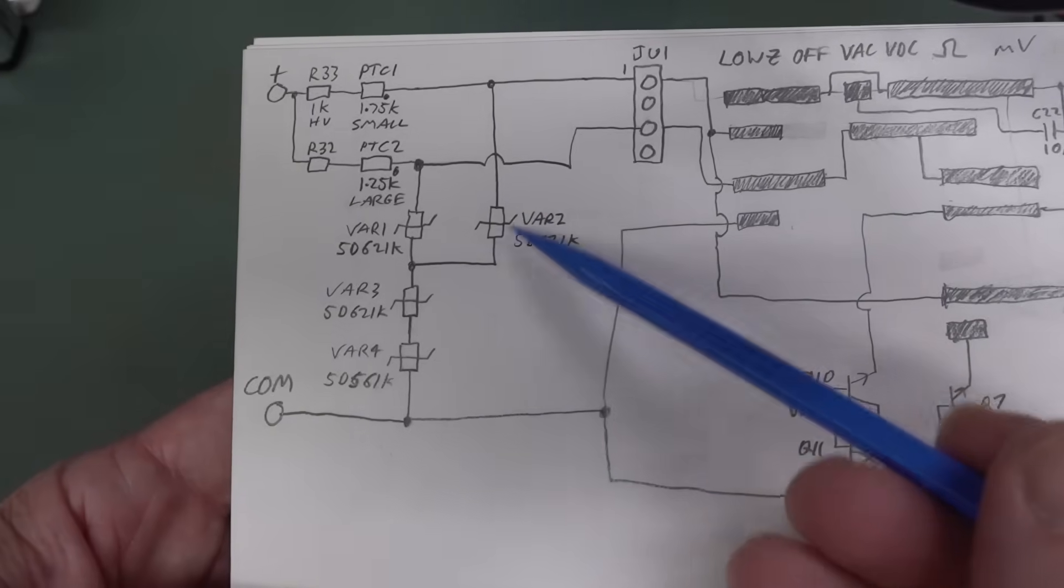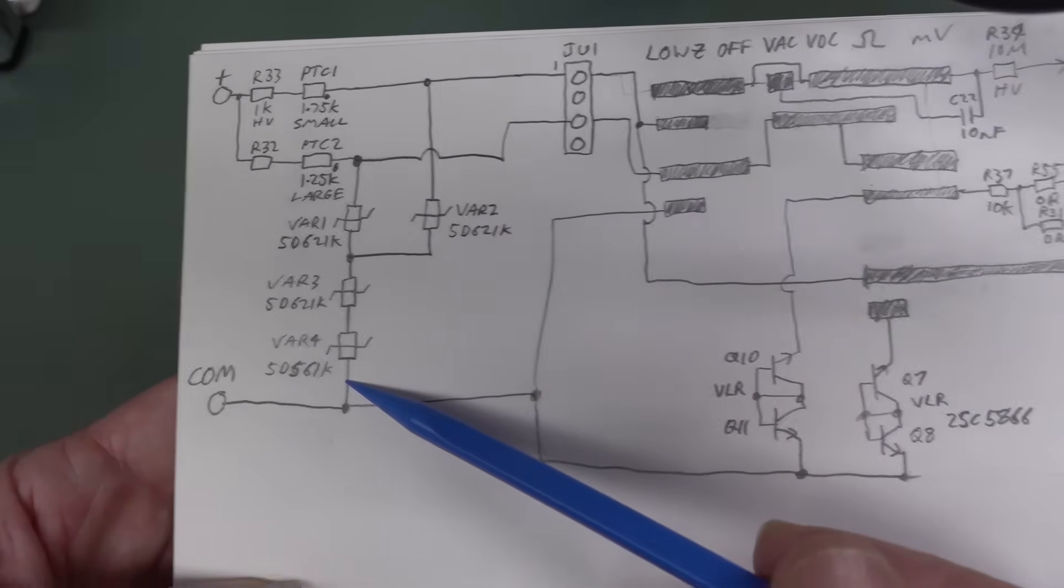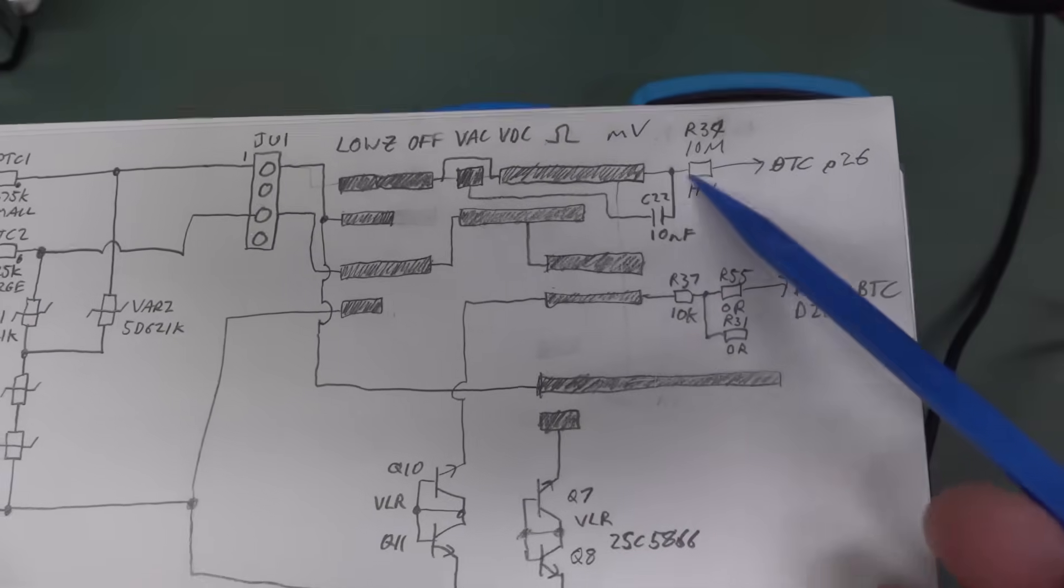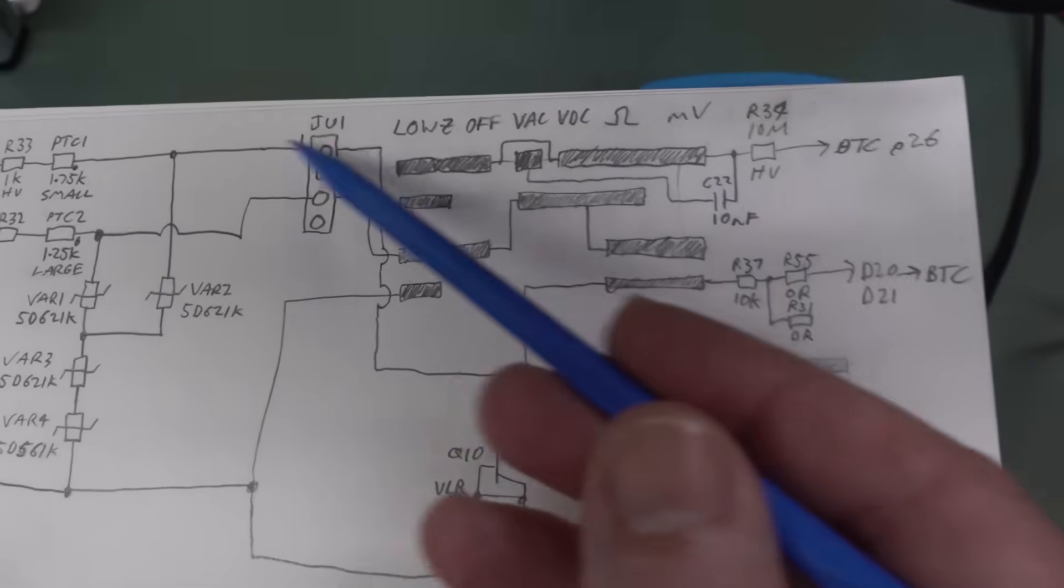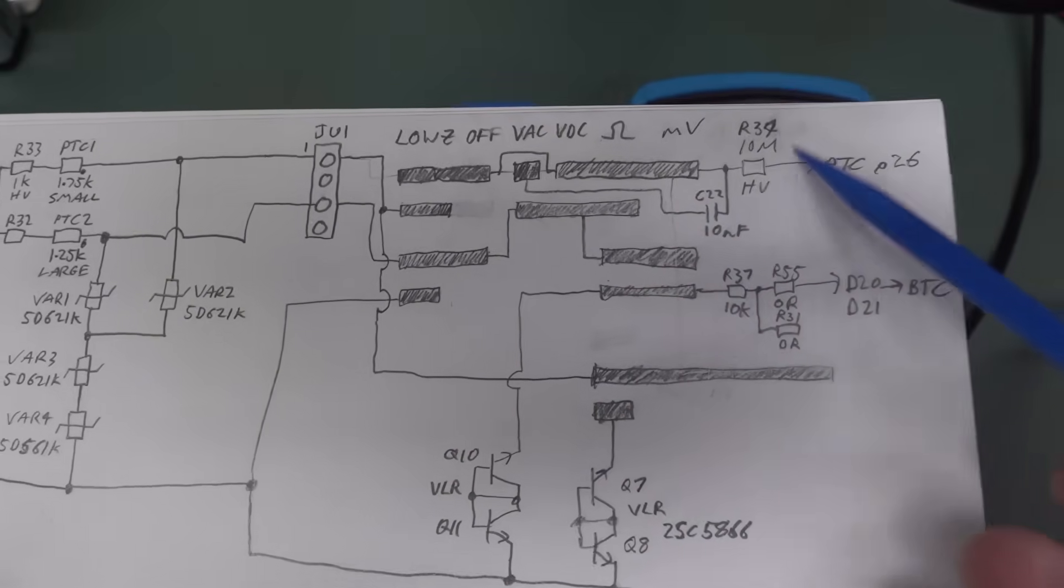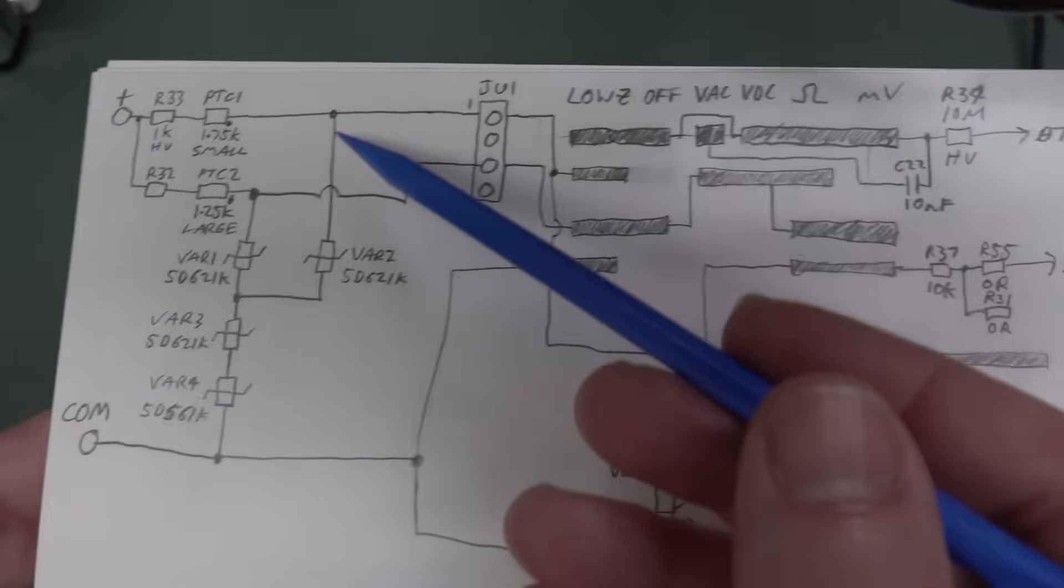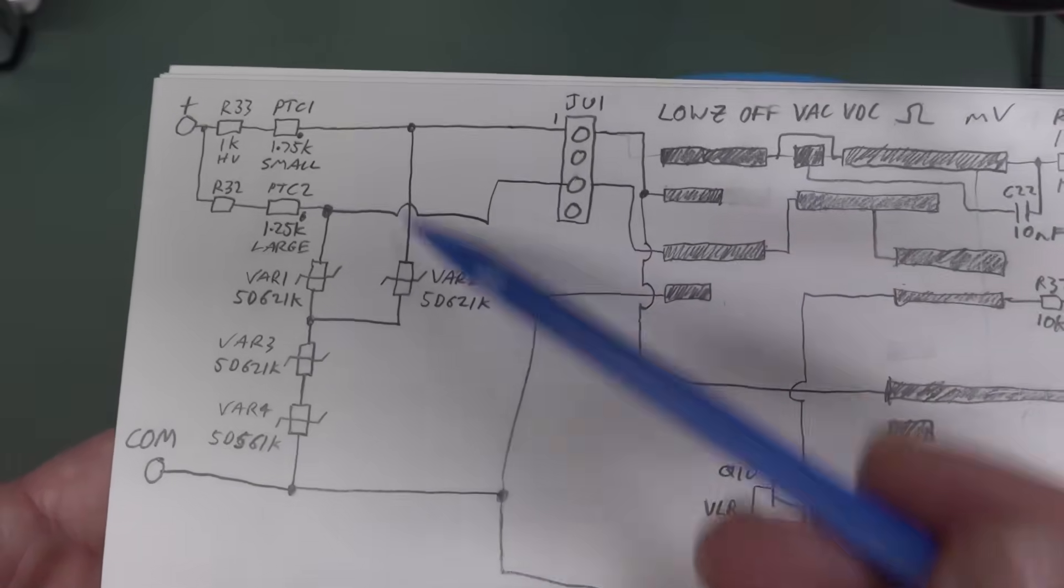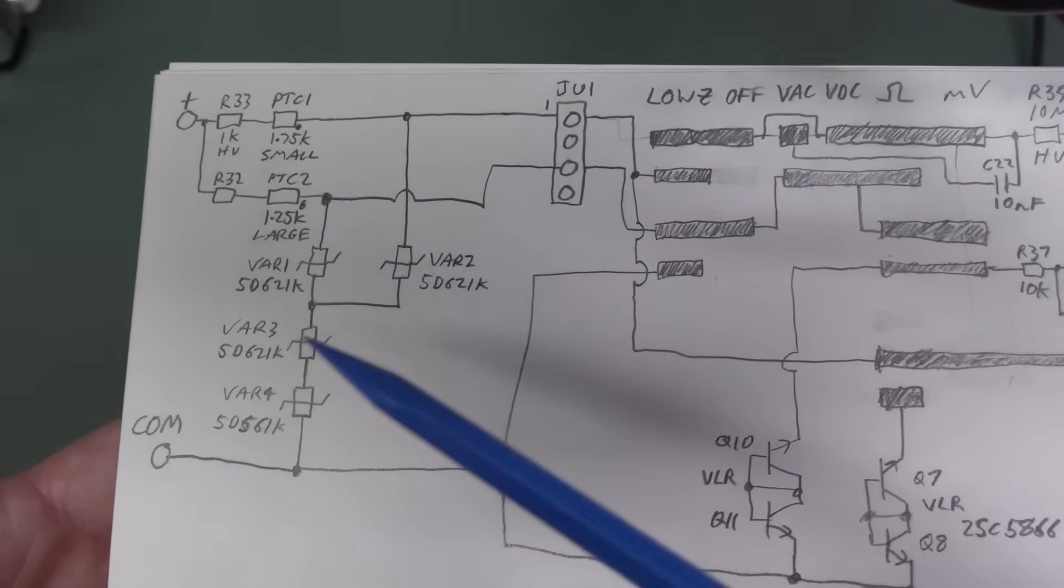But these MOVs are going to have a leakage current through them. So we've got our nominal 10 megaohm input impedance there. So what happens to our nominal 10 megaohm input impedance at say, 1,000 volts? Well, it's interesting. So let's measure it.